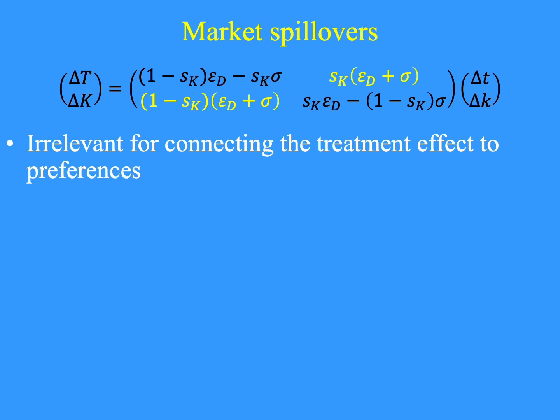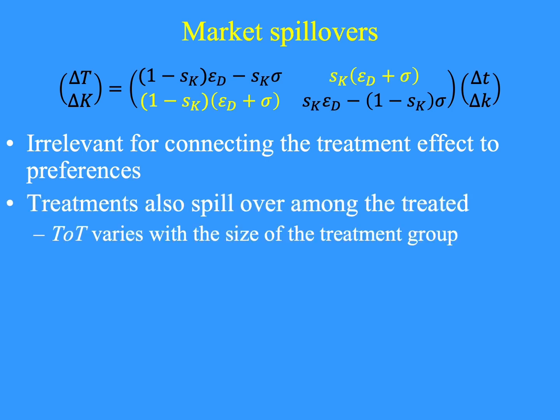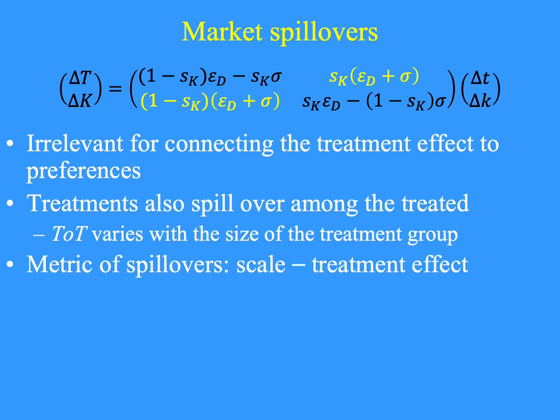The third result is that the market-wide treatment reveals the price elasticity of demand — it has nothing to do with substitution between T and K. Here is the full substitution matrix. The diagonal is the own-price elasticities of demand; the off-diagonal elements are the cross-price elasticities — in econometric terms, those are the spillovers. The spillovers are irrelevant for connecting the treatment effect to preferences. The treatment effect is just sigma, regardless of how much spillover there is. The treated also experience spillovers, so with a larger treatment share, greater spillovers for everybody get differenced out in the treatment effect. Our metric of spillovers is the sum of the off-diagonal, which works out to scale minus treatment effect.